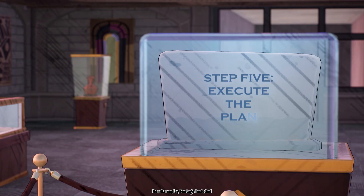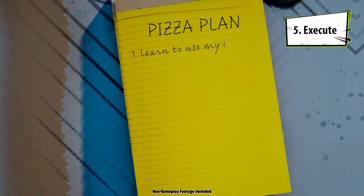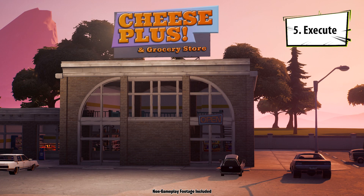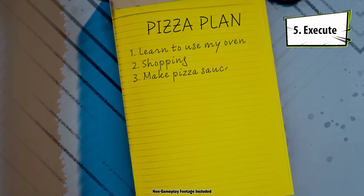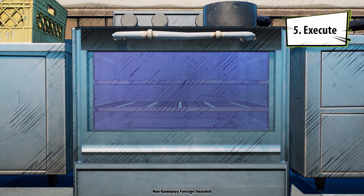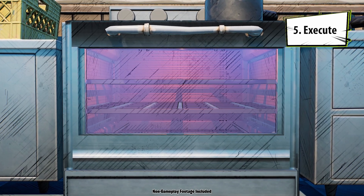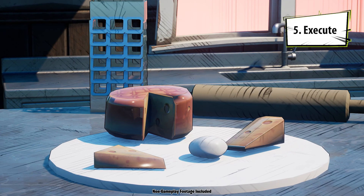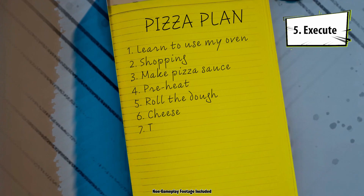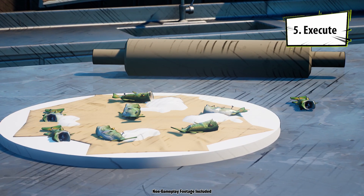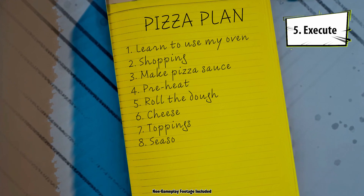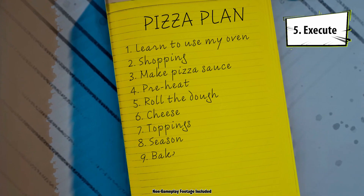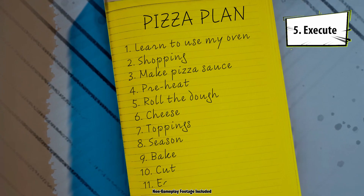Step five: execute the plan. To make my pizza, this will be my algorithm. One: learn to use my oven. Two: go grocery shopping. Three: make pizza sauce, which has a lot of sub-steps. Four: after learning how to use an oven, I now know I need to preheat it first. Five: roll out the pizza dough. Six: dump on lots of cheese. Seven: add the toppings I want — controversial, but I love an anchovy. Eight: season. Nine: bake. Ten: cut. Eleven: eat.